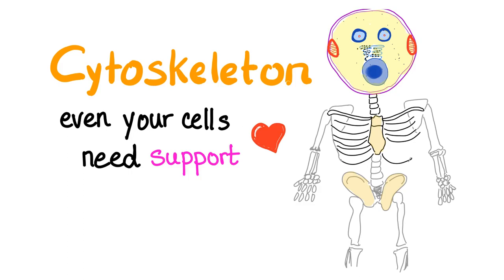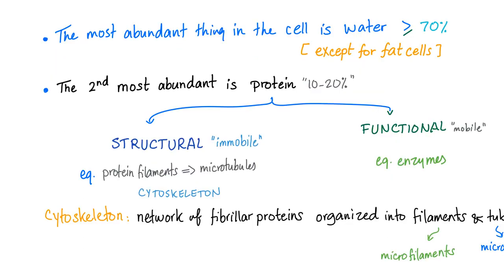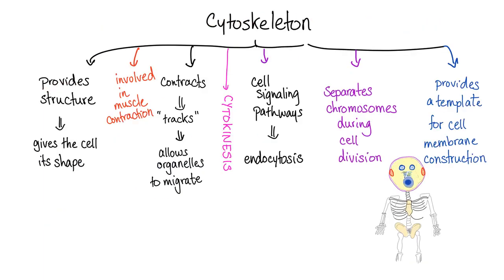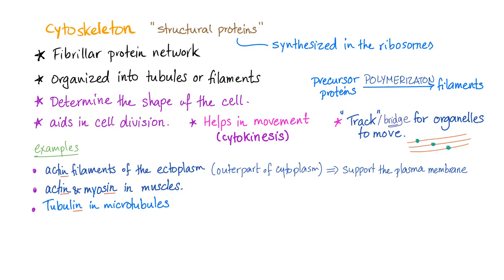Microfilaments are part of your cytoskeleton. The cytoskeleton is microfilaments, microtubules, and intermediate filaments. The most abundant thing in the cell is water; the second most abundant is protein. We have structural proteins and functional proteins — structural proteins form the cytoskeleton. Here are the functions of the cytoskeleton: provides structure, muscle contraction, provides tracts for organelles, cytokinesis, cell signaling, chromosome segregation. It provides a template for cell membrane construction called ectoplasm. The cytoskeleton is a network of fibrillar proteins organized in tubules called microtubules and filaments called microfilaments. It will determine the shape of the cell and aid in cell division.